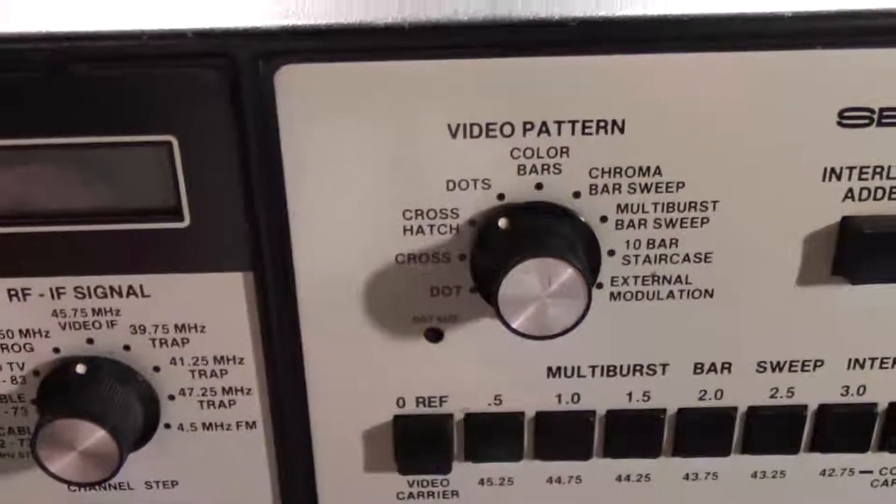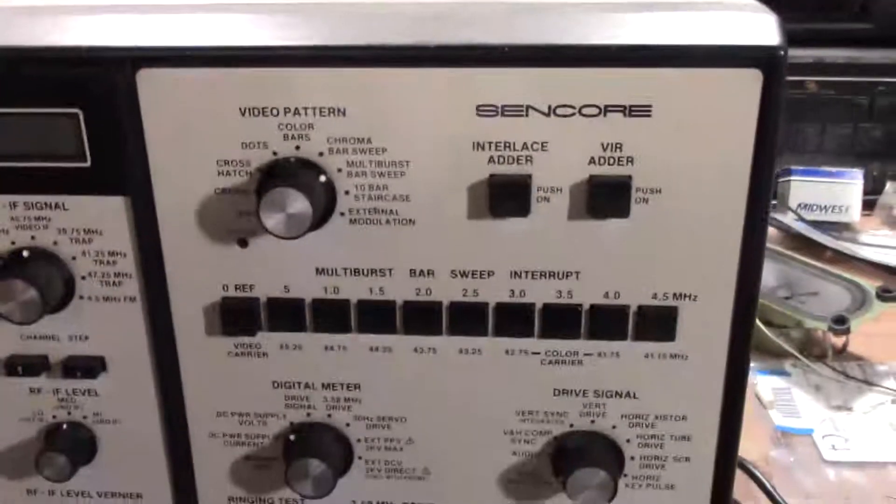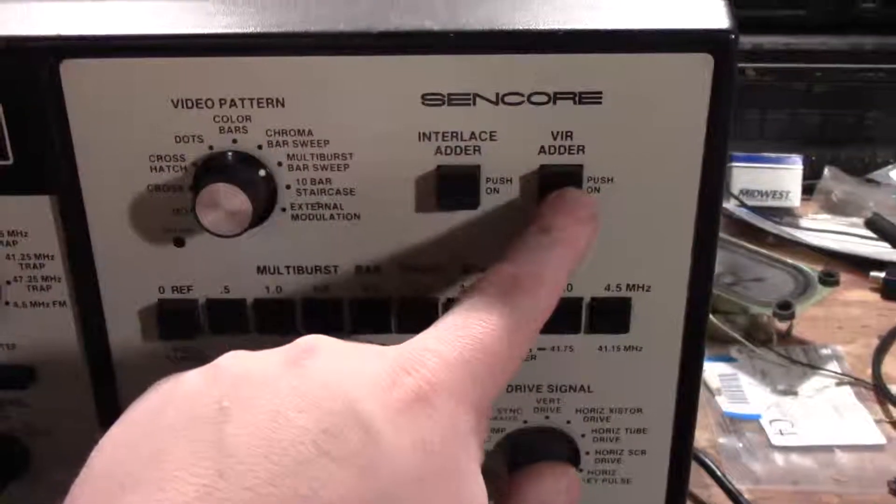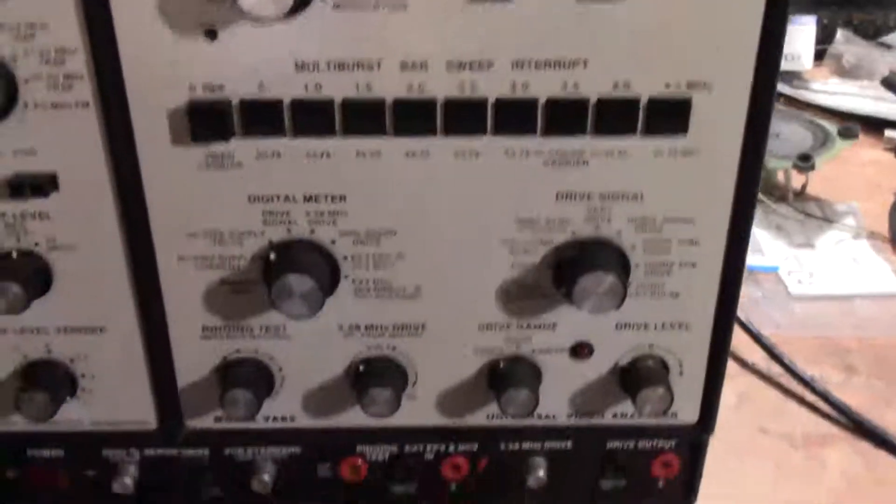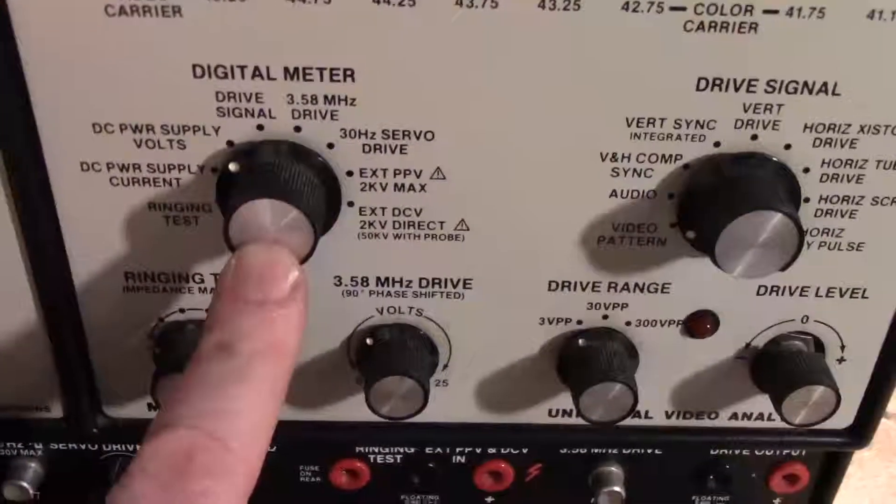Dot pattern, cross-hatch for convergence, VIR adder if you're working with one of those GE TVs that has VIR. It's got different meters here: a multimeter, a voltmeter.